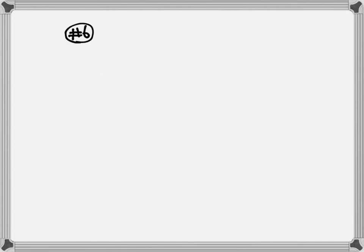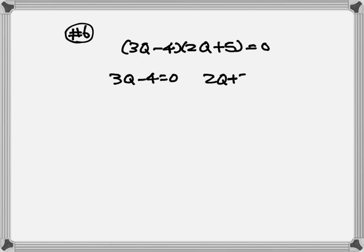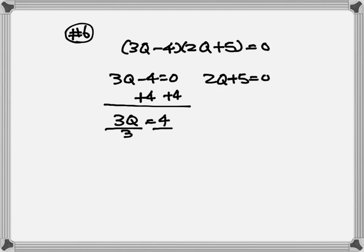Let's look at number 6. We have parenthesis of 3q minus 4 times parenthesis of 2q plus 5, equal to 0. Let's set the number in each parenthesis equal to 0. So 3q minus 4 equals 0: plus 4 plus 4, so 3q equals 4, so q equals 4 over 3. For the second one, 2q plus 5 equals 0: so 2q equals negative 5, so q equals negative 5 over 2.